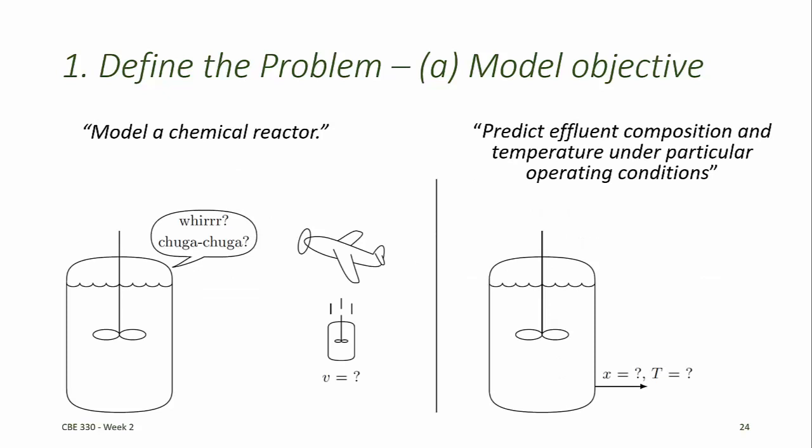If we say we want to model a chemical reactor, we might have to answer innumerable questions about what the chemical reactor does. For example, we may need to answer questions about what kind of sounds the chemical reactor makes, or what its terminal velocity is when it's dropped out of an airplane. But if we say we want to predict the effluent composition and temperature under a particular set of operating conditions, we know what features of the chemical reactor we need to include, and we can ignore many other features.